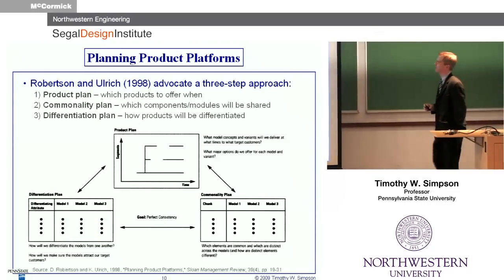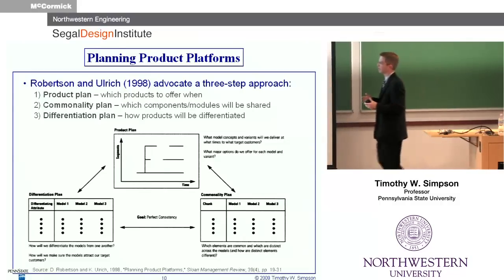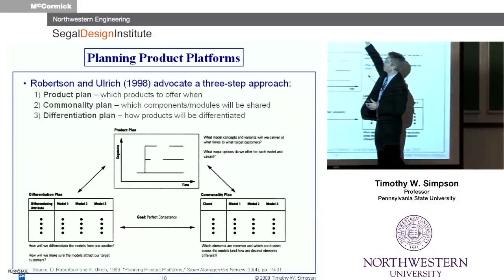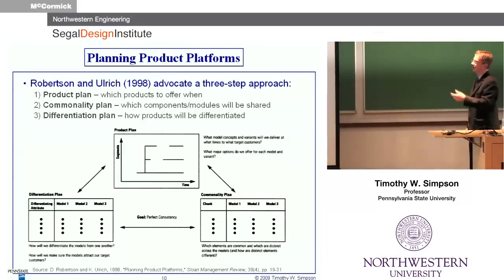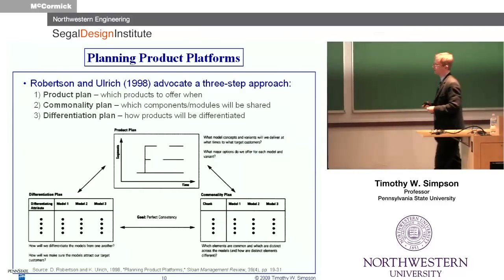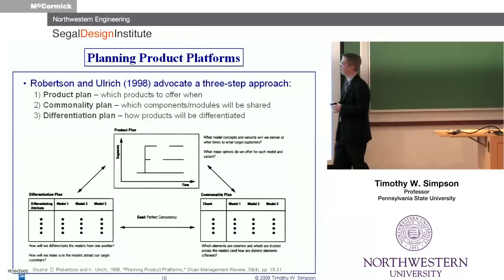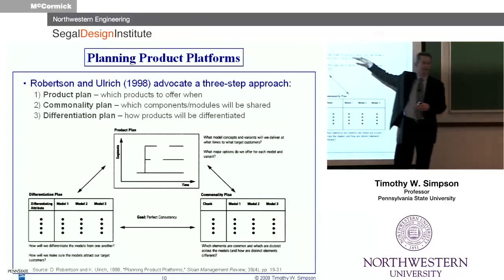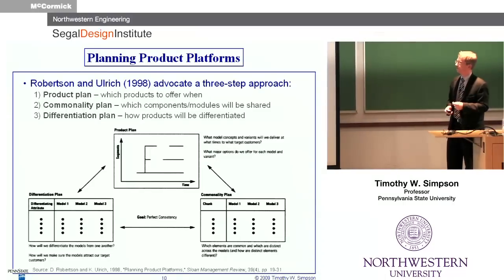Robertson and Ulrich advocate a three-step approach for doing this. This has really become the framework I'm hanging different tools and methods on. I like how simply it breaks down the problem: you have to think first about what are the products you're going to offer for the marketplace, then what is the commonality plan — what are you going to share across these different products and what are you going to make distinct — and that's what the tools and methods I'll go into for the rest of the talk address. I'll then show you how we've been putting them together lately.